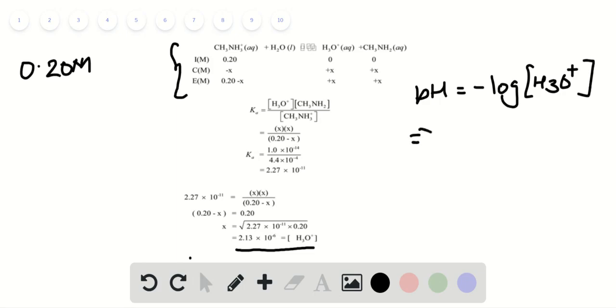Substituting the values: negative log of 2.13 × 10^-6. The pH turns out to be 5.7.